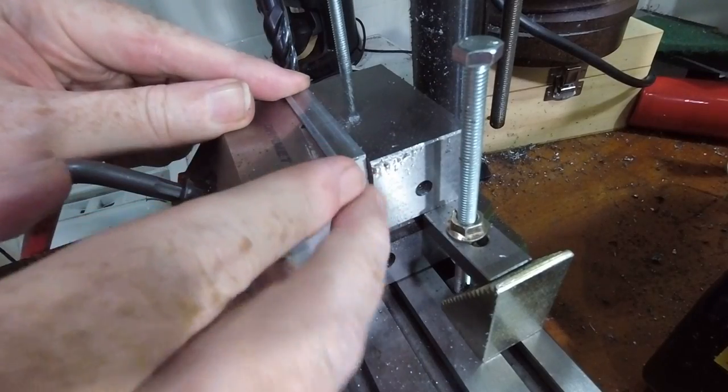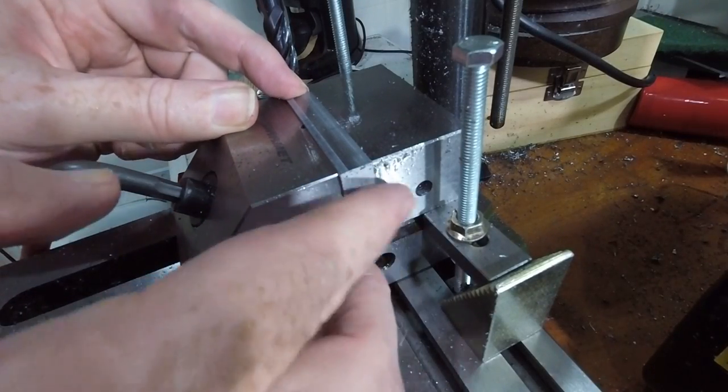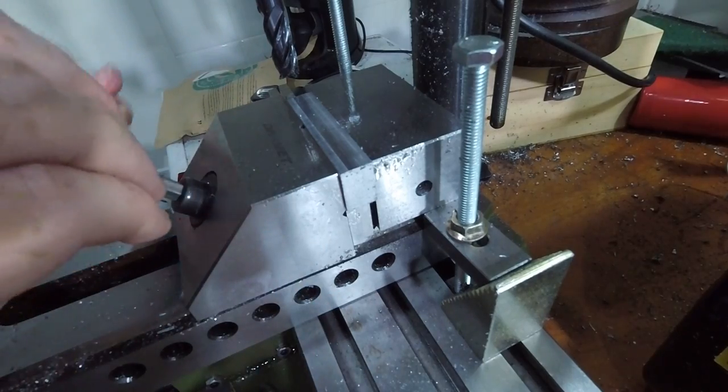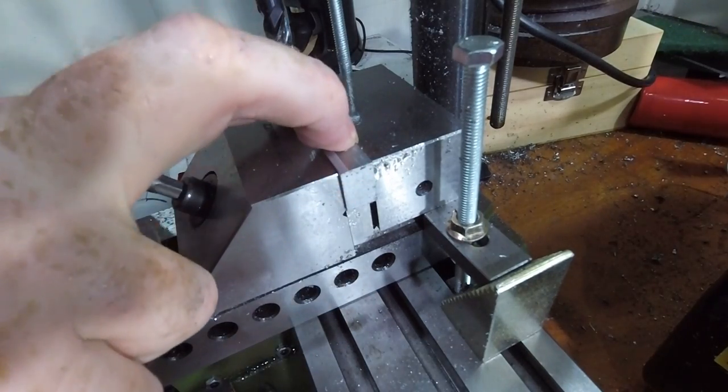To clean up the ends while keeping the part firmly held, I decided to try side milling. This works around the problem that the part is much longer than the depth of the vise.